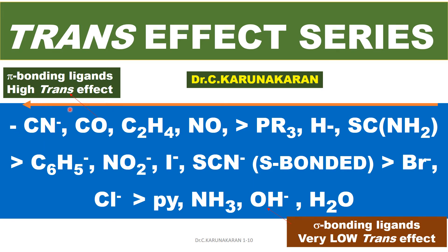The high trans effect ligands have back-end pi and pi-star orbitals, so they can accept electrons from the metal ligand to form back bonding — therefore they are high trans effect ligands. The poor trans effect ligands are sigma bonding ligands.